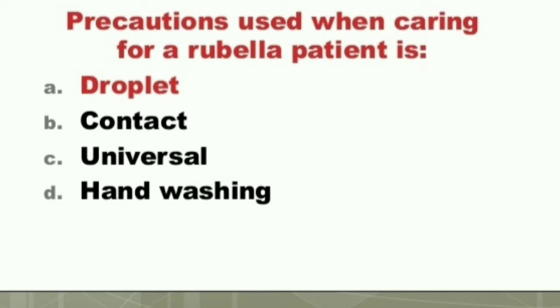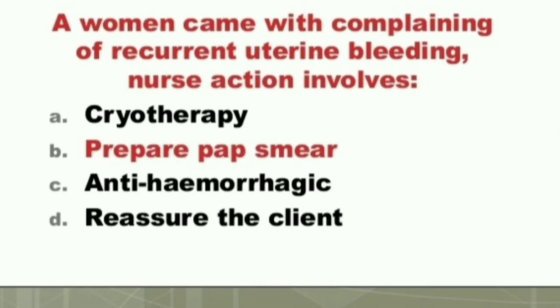Question: The precaution used when caring for a rubella patient is: A) Droplet, B) Contact, C) Universal, D) Handwashing. The answer is A) Droplet. The precaution used when caring for a rubella patient is droplet precaution.